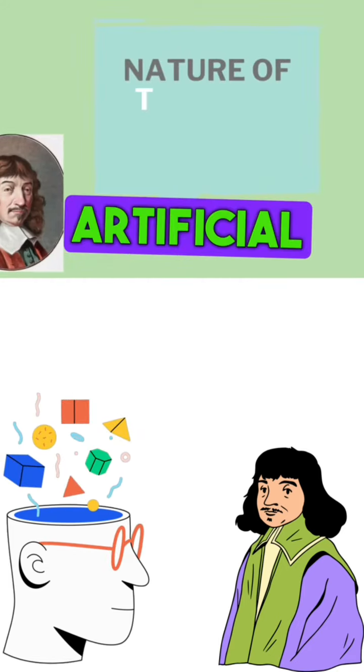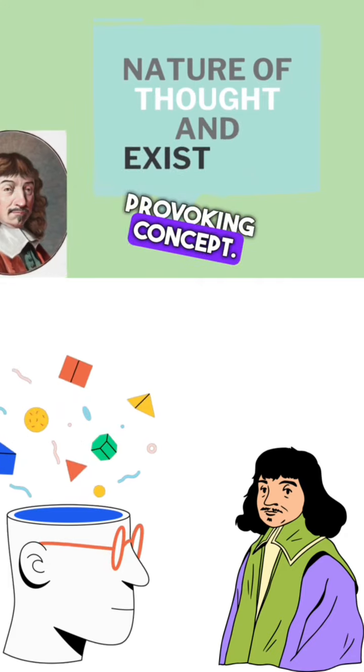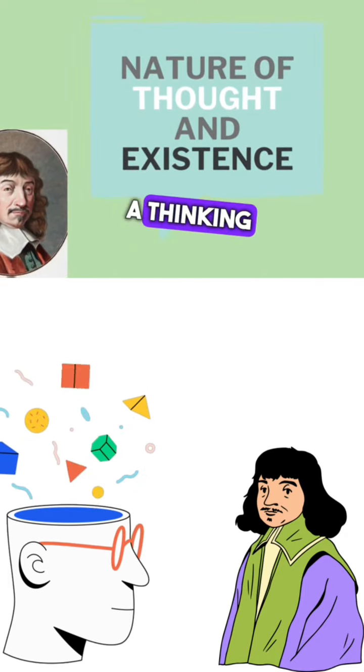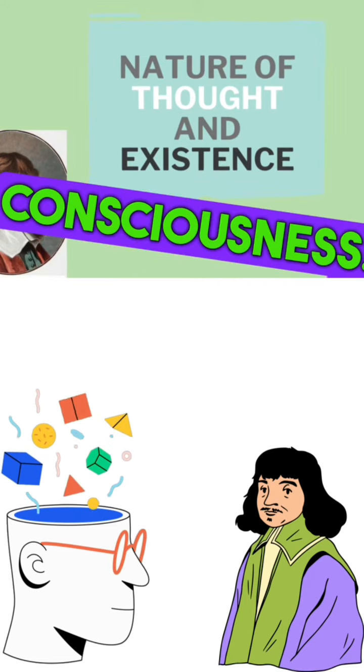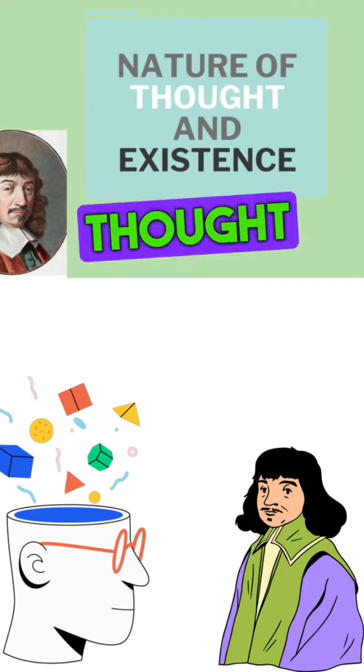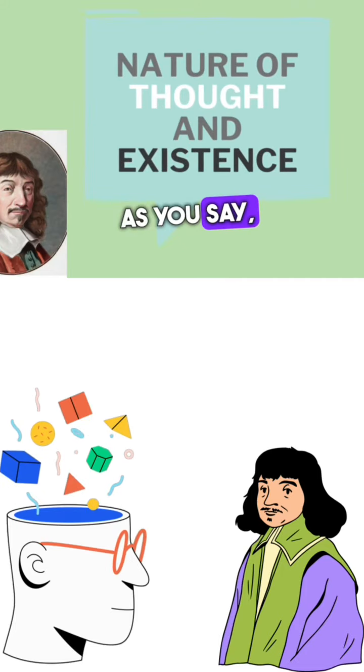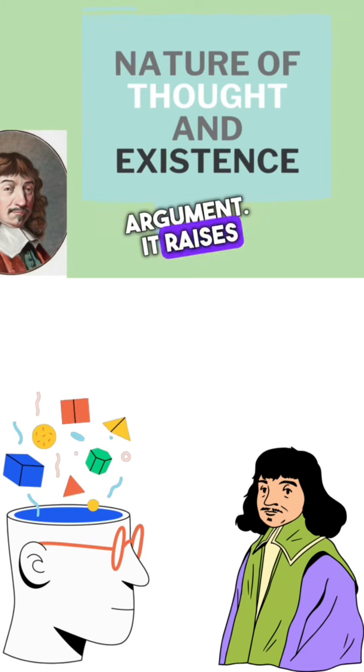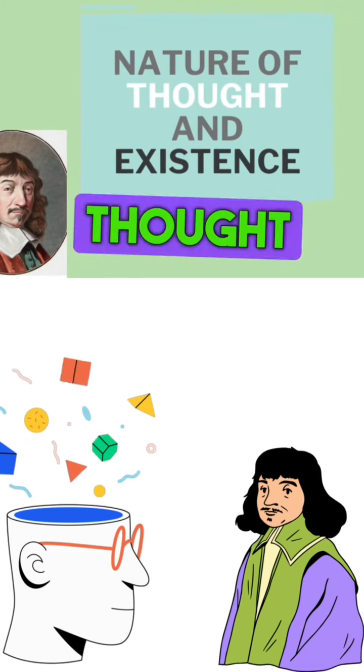Descartes replied, Artificial thought is a thought-provoking concept. My argument Cogito was rooted in the notion of a thinking self, which implies consciousness. If artificial entities can process information and simulate thought without consciousness, as you say, it challenges the very foundation of my Cogito argument. It raises important questions about the nature of thought and existence.